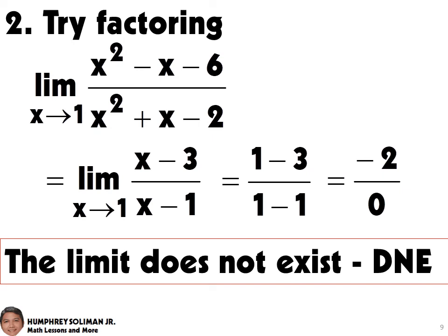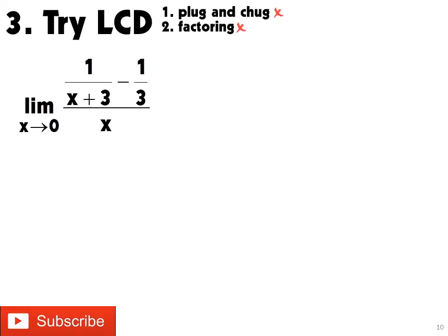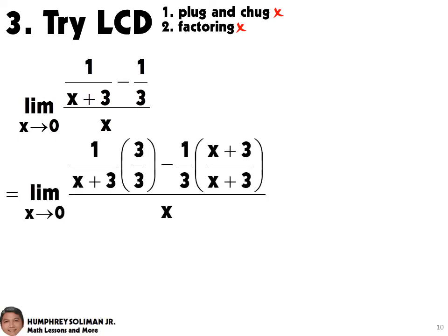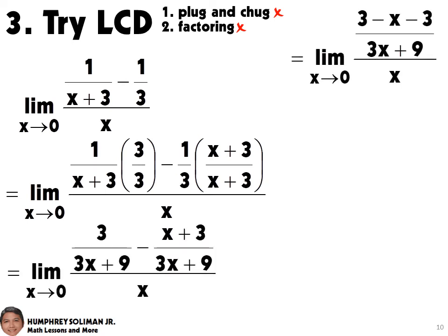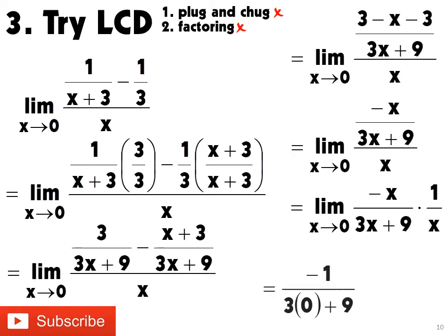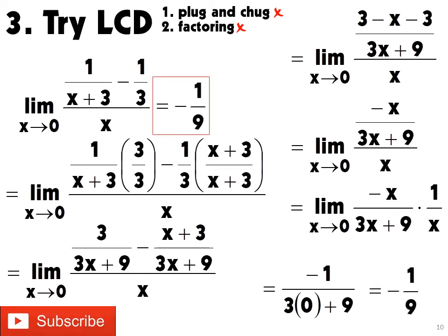For our next example, we can check that plug and chug and factoring will not work. We will try another option, which is combining fractions using LCD, or the least common denominator. And then, we will try plug and chug after we simplify the function. This will give us negative 1 over 9, and this is already the answer.